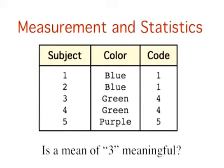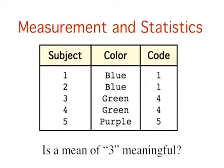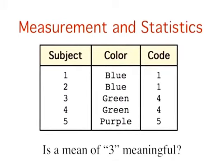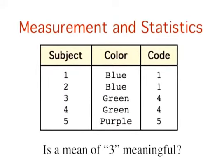Consider the hypothetical data displayed in this table. Each code is a number, so nothing prevents us from computing the mean code assigned to the children. The mean happens to be 3, but you can see that it would be senseless to conclude that the average favorite color is yellow, the color with a code of 3. Such nonsense arises because favorite color is a nominal scale, and taking averages of its numerical labels is like counting the number of letters in the name of a snake to see how long the snake is.